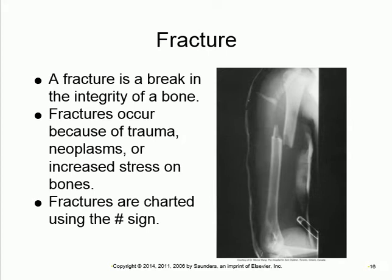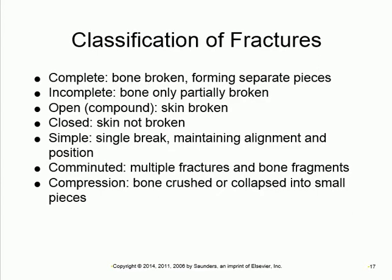The first abnormality we'll discuss is fracture. A fracture can be complete — one bone becomes two pieces — or incomplete, meaning a partial break where the bone is still one piece but has a breakdown. Fractures can also be called open or closed depending on the skin. If the skin is intact, it's closed; if the skin is broken, it's called open, or sometimes compound fracture.